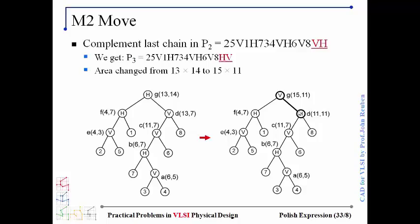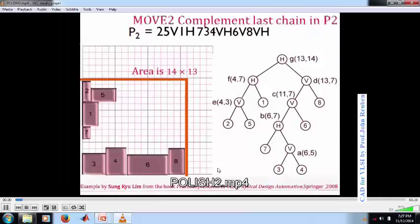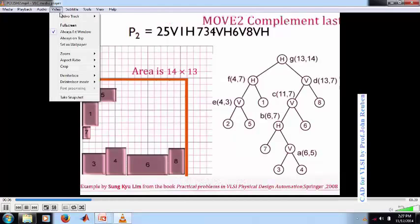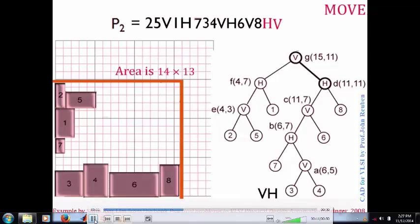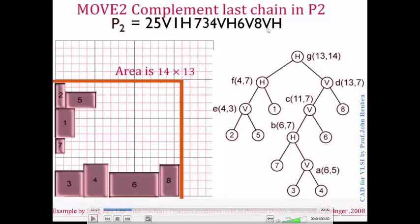This move significantly affects the floor plan. Just a small change — complementing two operators — can significantly affect the floor plan. We have the initial area of 14 by 13, with the last two operators being H and V. This is the initial slicing tree and we want to complement these last two operators.